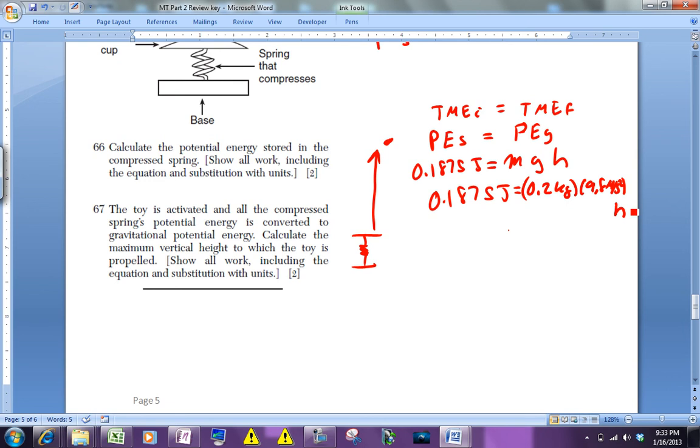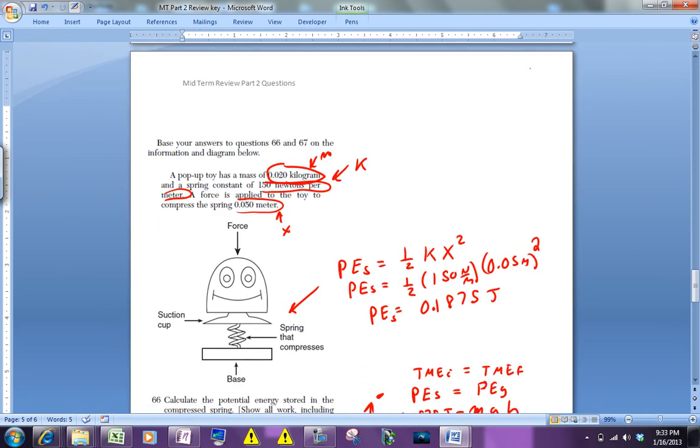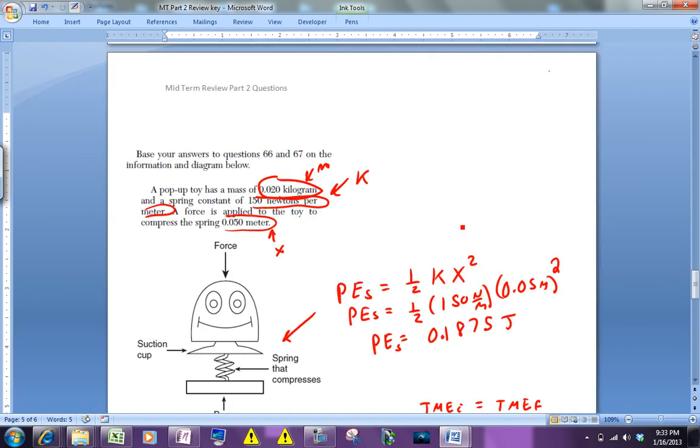So when you divide, 0.2 times 9.8, divide that over, you're going to get an H that is 0.96 meters.